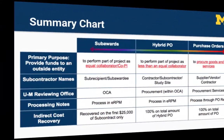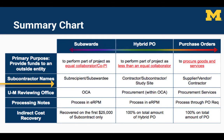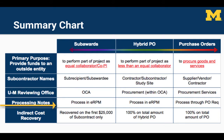This chart summarizes what we've discussed so far. It provides you with the type of agreement, the classification of the organization — whether it's subrecipient or contractor — which department processes the agreement, what mechanism is used to request the contract, and the indirect cost assessment.